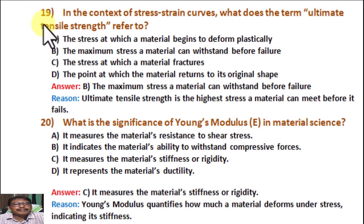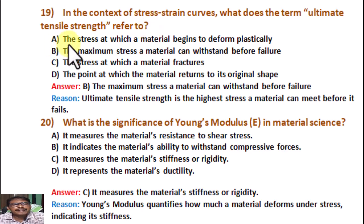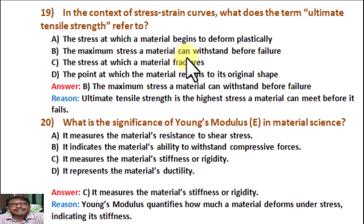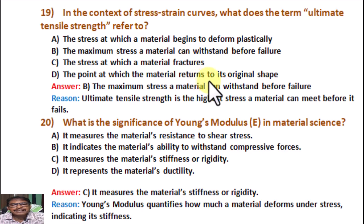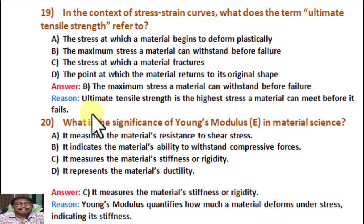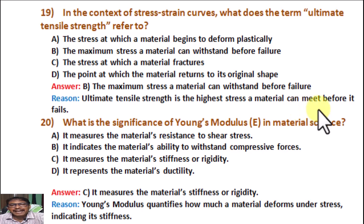Question number 19. In the context of the stress-strain curve, what does the term ultimate tensile strength refer to? Option A: The stress at which a material begins to deform plastically. Option B: The maximum stress a material can withstand before failure. Option D: The point at which the material returns to its original shape. Correct answer is B: The maximum stress a material can withstand before failure. Reason: Ultimate tensile strength is the highest stress a material can endure before it fails.